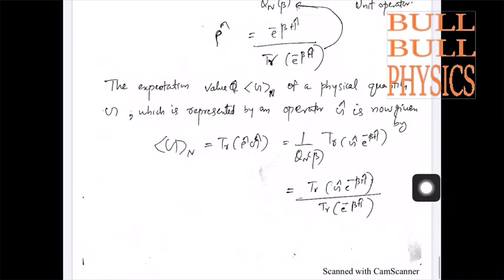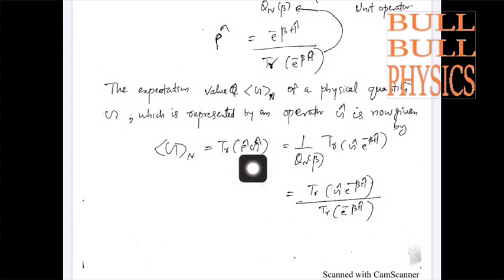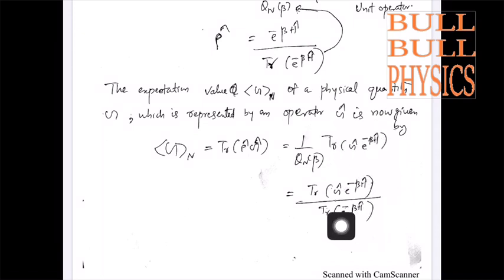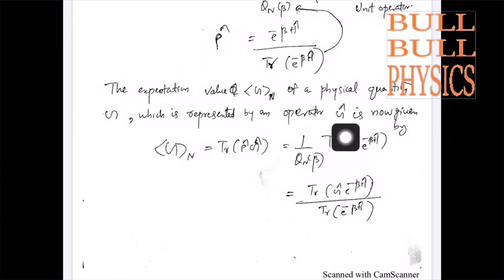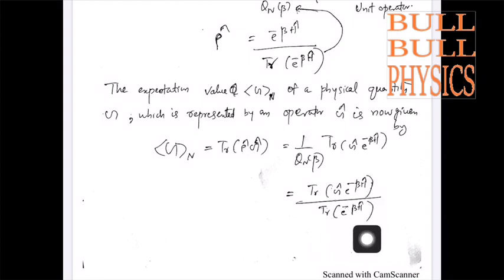The expectation value of a physical quantity g, whose corresponding operator is g, is given by ⟨g⟩ = Tr[ρg] = (1/Q_N(β)) Tr[exp(-β H) g]. We have changed the order since g commutes with H, so we can write it as Tr[g exp(-β H)] over Tr[exp(-β H)].